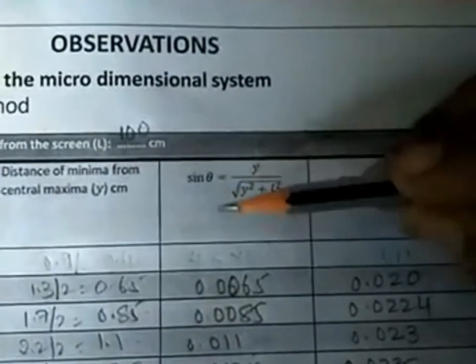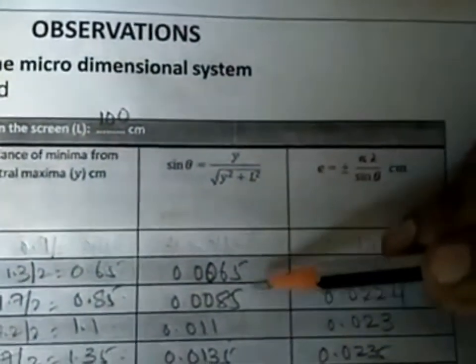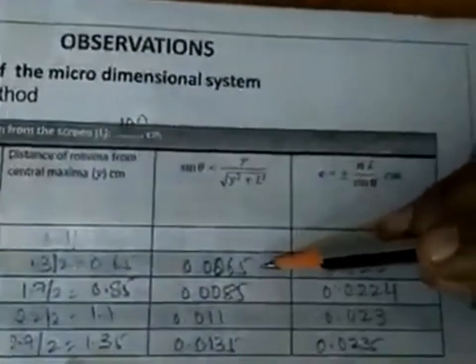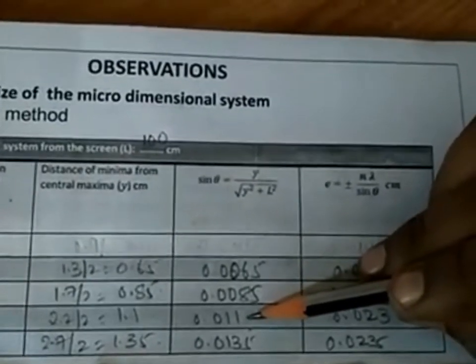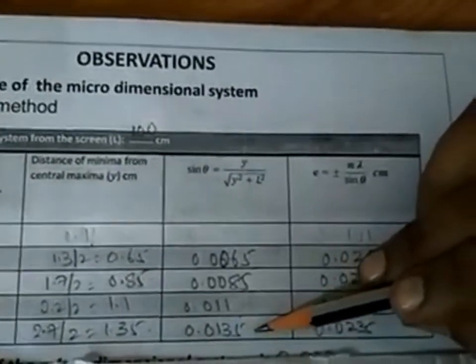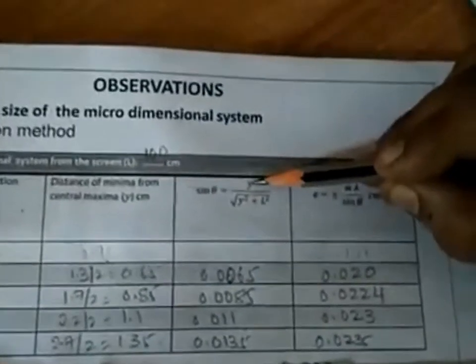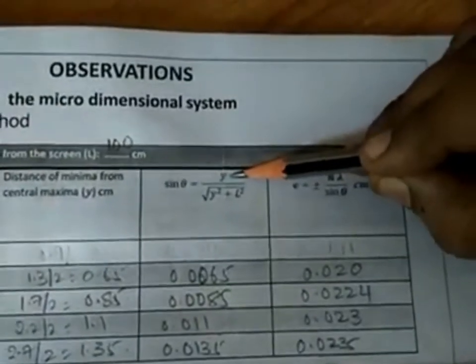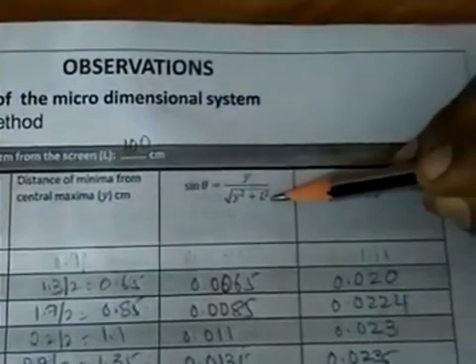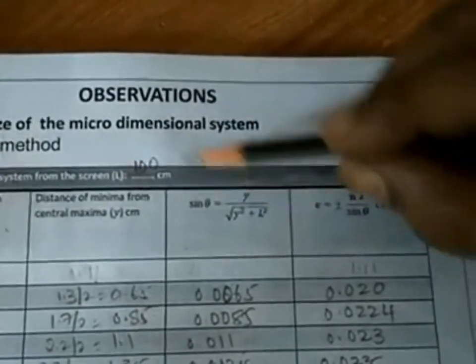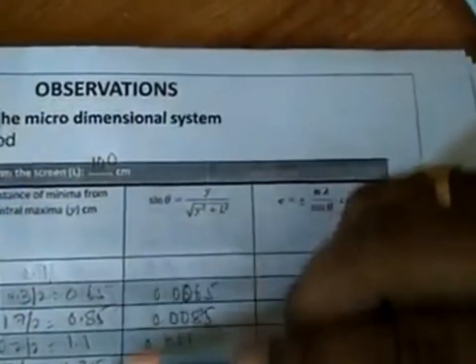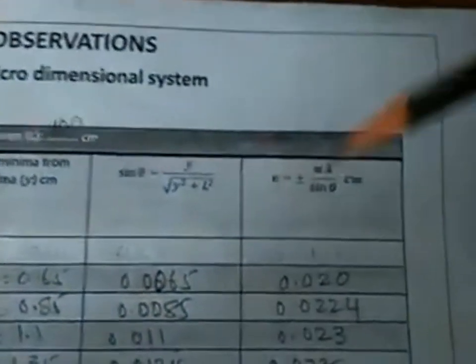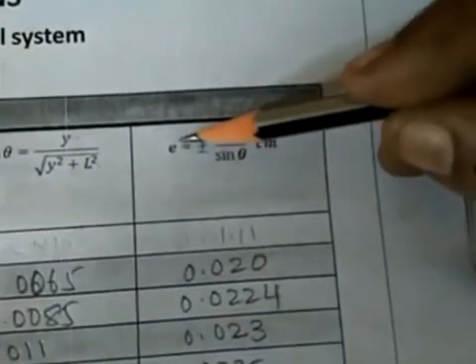Next, we calculate the sinθ values corresponding to the various orders of minima. For the second order minima, sinθ = 0.0065; for the third order, 0.0085; fourth order, 0.011; and fifth order, 0.0135. The sinθ values are calculated using the formula y / √(y² + L²), where y is the position of the minimum from the central maximum and L is the distance between slit and screen, which is 100 centimeters.